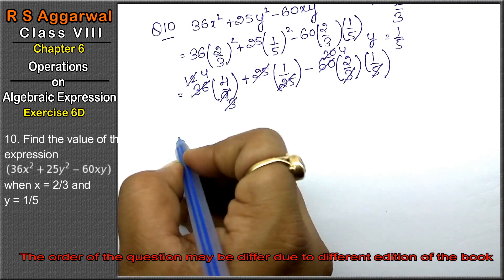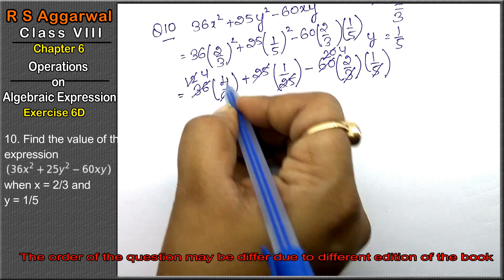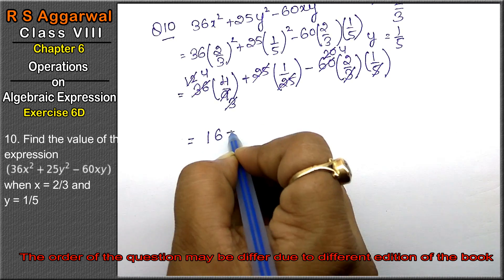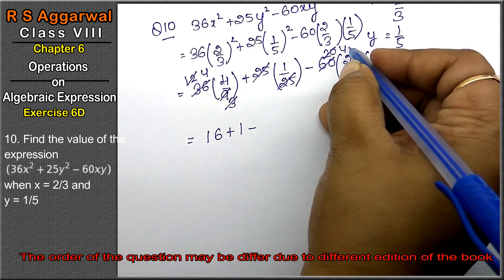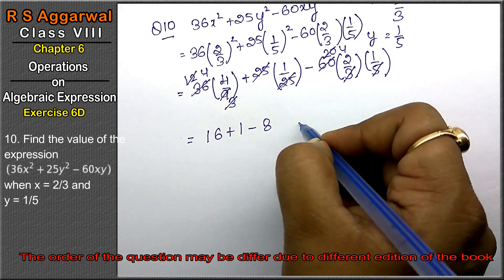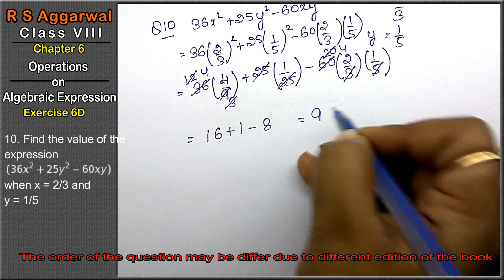So here, 4 × 4 = 16, plus 1, minus 4 × 2 = 8. That gives 16 + 1 - 8 = 9. So 9 is the answer.